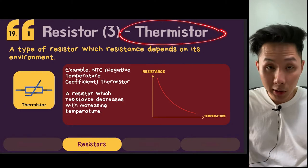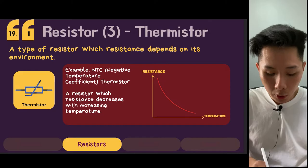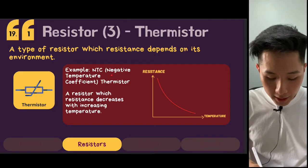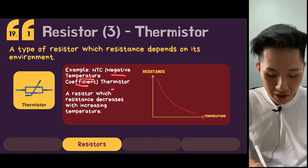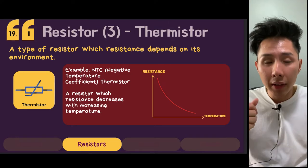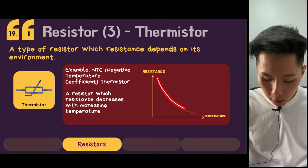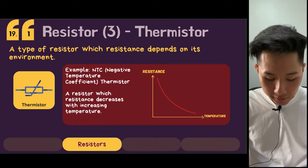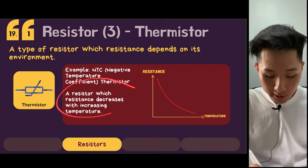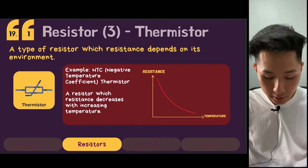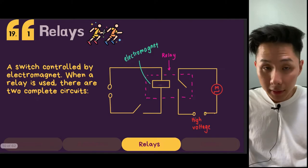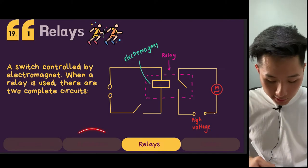We also have the thermistor — another type of resistor in which the resistance depends on the environment. For a negative temperature coefficient (NTC) thermistor, the higher the temperature, the lower the resistance of the resistor will be. So it's a resistor in which resistance depends on temperature.